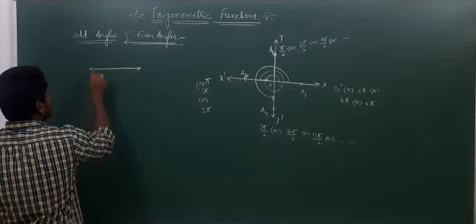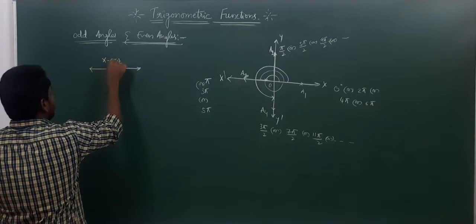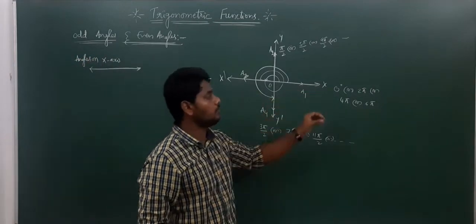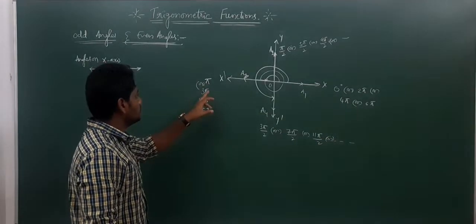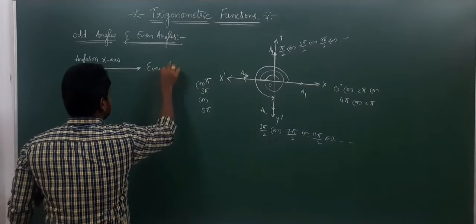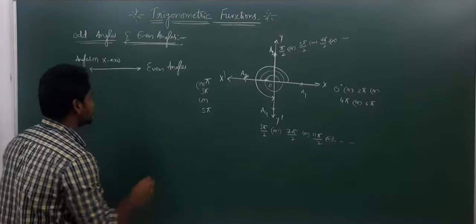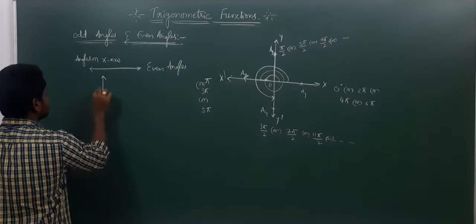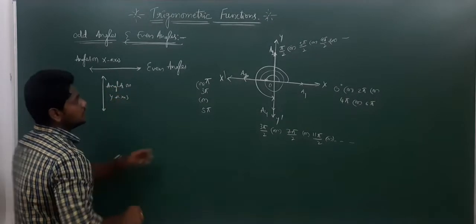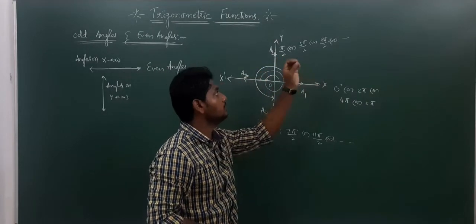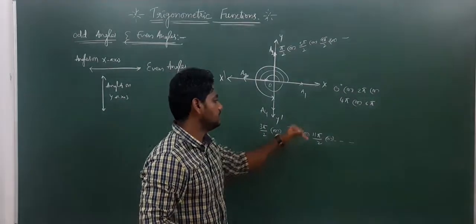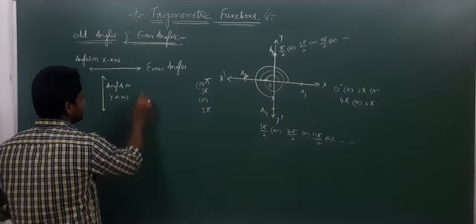It is very easy to remember: angles on the x-axis — such as 0, 2π, 4π, 6π or π, 3π, 5π — we consider as even angles. Angles on the y-axis — such as π/2, 5π/2, 9π/2, 13π/2 or 3π/2, 7π/2, 11π/2, 15π/2 — we consider as odd angles.